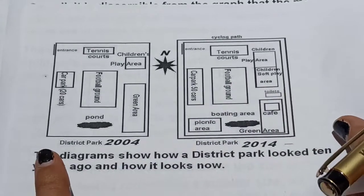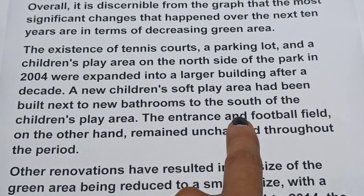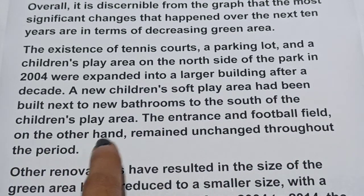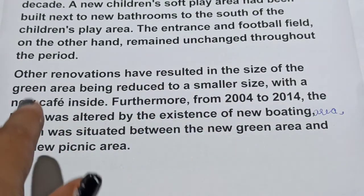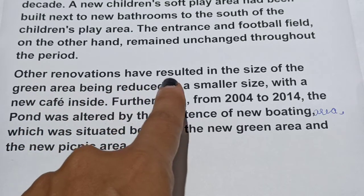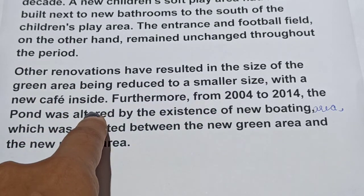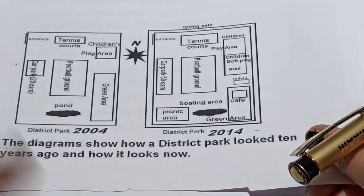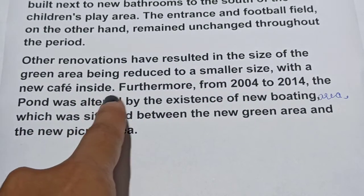The entrance and football field, on the other hand, remained unchanged throughout the period — no changes were made to either. Other renovations resulted in the size of the green area being reduced, with a new cafe constructed inside it. Furthermore, from 2004 to 2014, the pond was altered with the addition of a new boating area.